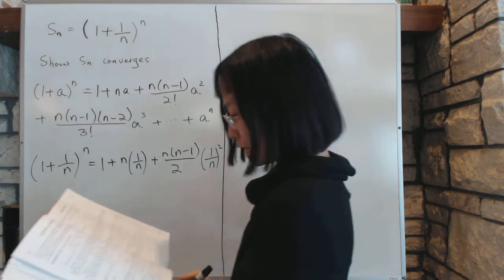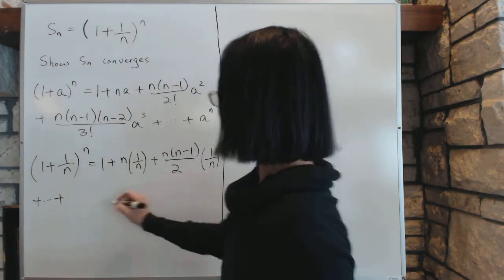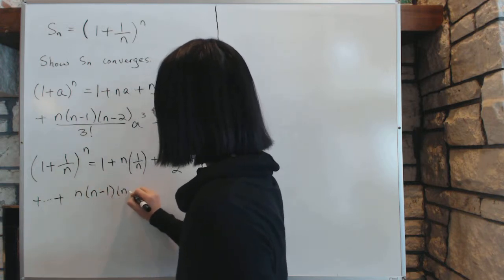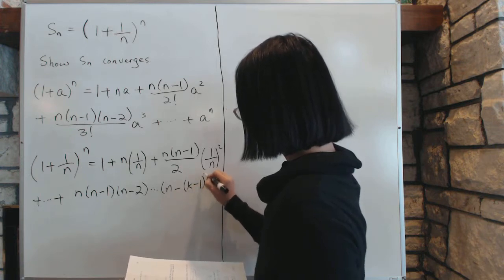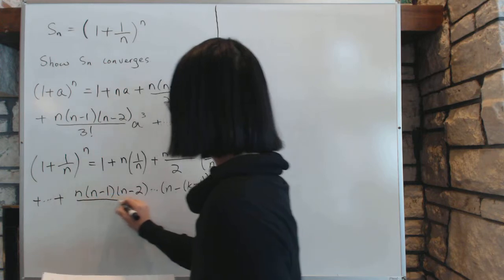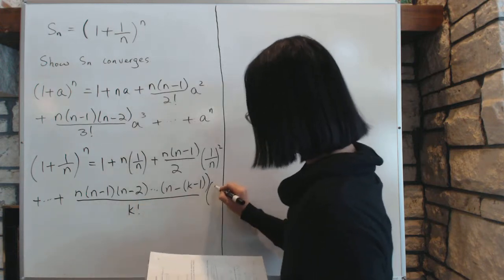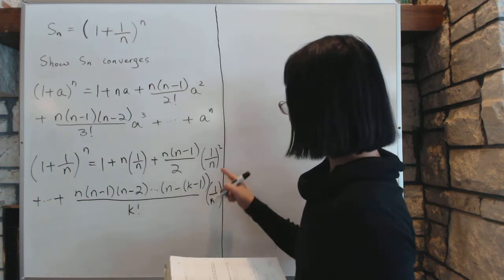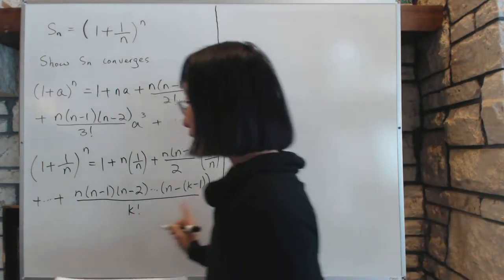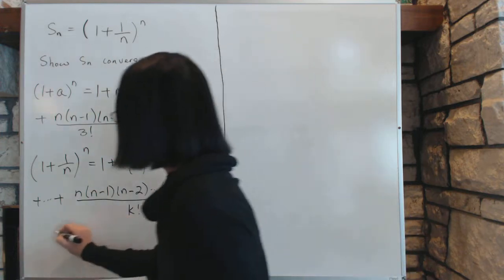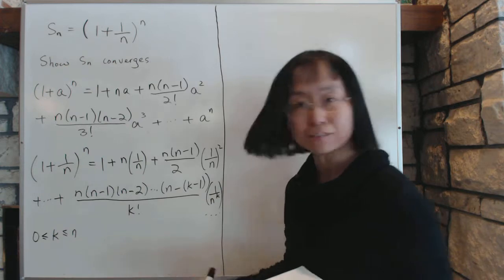In general, as n goes up, a specific term looks like this: you have n times (n minus 1) times (n minus 2), going all the way up to n minus (k minus 1). The whole thing is divided by k factorial, and you multiply by 1 over n to the power k. You keep adding until k goes from 0 all the way up to n, and then we're done with the binomial expansion.